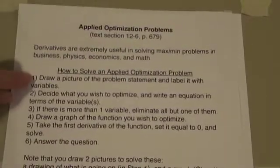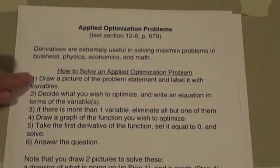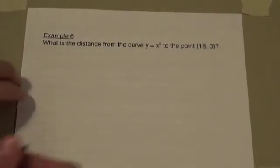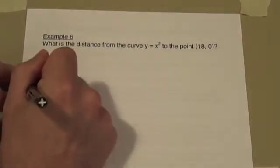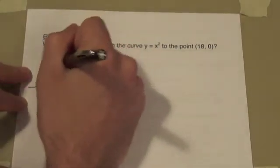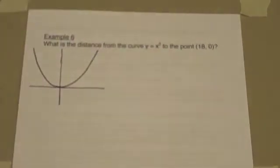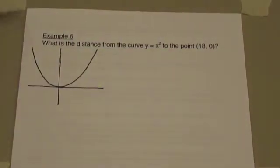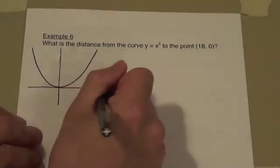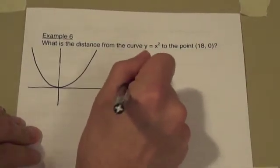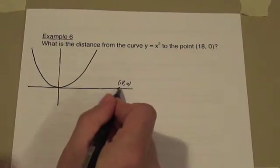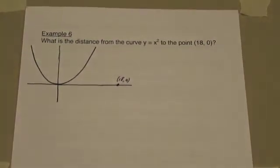Let's start with the first step. Draw a picture of the problem statement and label it with variables. So we've got the curve y equals x squared, which looks like this, and we want the distance from that curve to the point 18 comma 0. Let's extend this. Here's the point 18 comma 0 out 18 units on the x-axis.